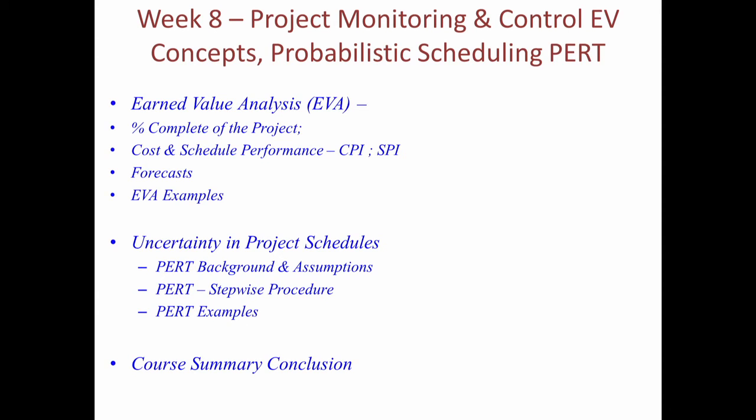We then started with earned value analysis, extending the project monitoring and control issue to a higher management level. We moved from the micro and macro plan to the management level where earned value analysis is used. We looked at how percentage complete of a whole project can be computed and how the earned value analysis approach is useful for that. We then talked about the cost and schedule performance indicators, which are extremely important and are the means by which a project manager makes a quick assessment of the status of a project. We also looked at how these earned value indicators are applicable not only at the project level but also at the work package level, and how forecasts can be developed based on them.